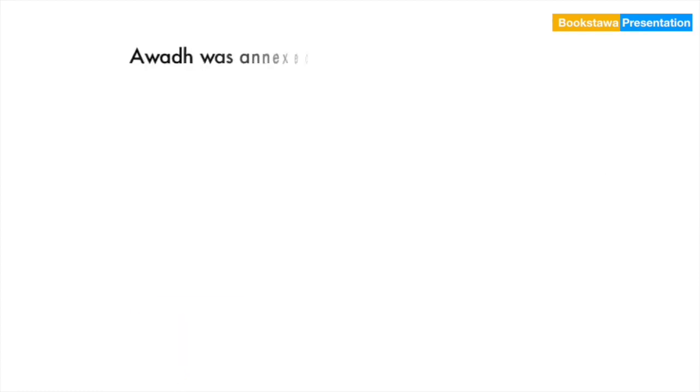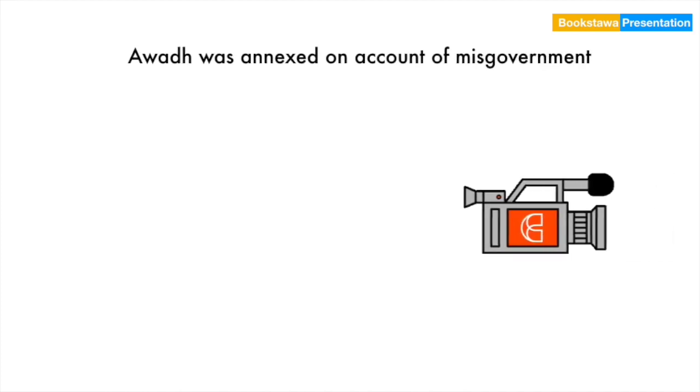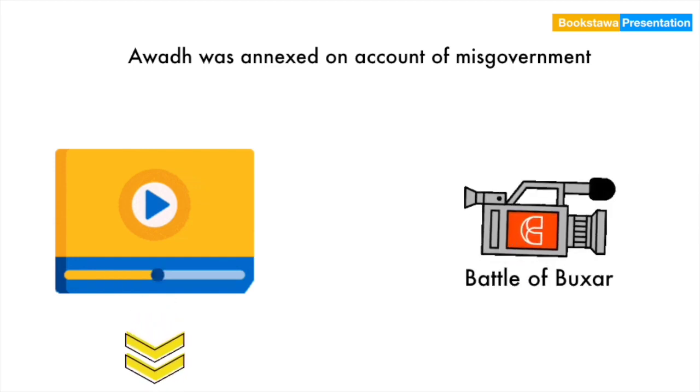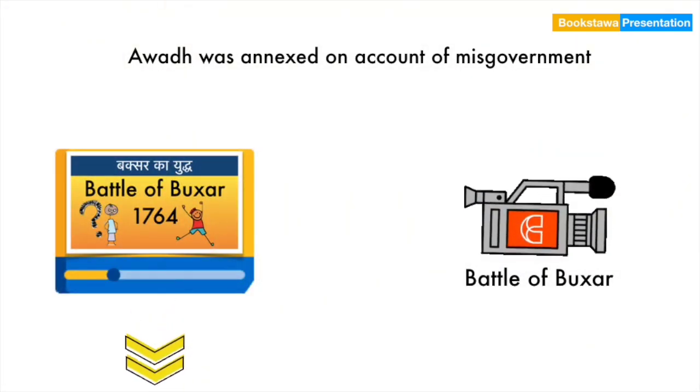Apart from this, Dalhousie had also annexed Awadh. The reason given was that the Nawab of Awadh is not able to run the government properly. Awadh is the same state which was given protection by the British after the Battle of Buxar. We have already uploaded an interesting video on the Battle of Buxar. You will find its link in the description.